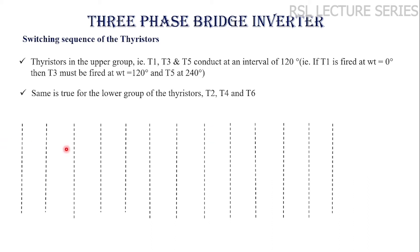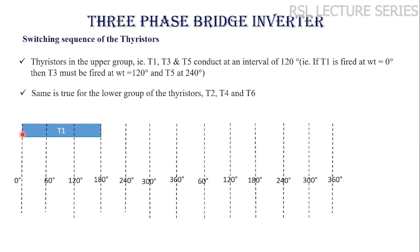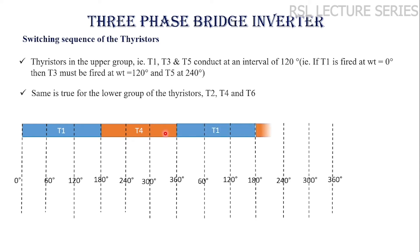We will divide into 60 degree intervals: 0 to 60, 60 to 120, 120 to 180, and so on. Assuming that at omega-t equal to 0, T1 is triggered, it will conduct for a period of 180 degrees from 0 to 180. T1 and T4 form a pair, so after T1, T4 will start conducting for another 180 degrees. T4 is triggered at 180 and conducts till 360. After T4 again T1 will be conducting, forming one pair.